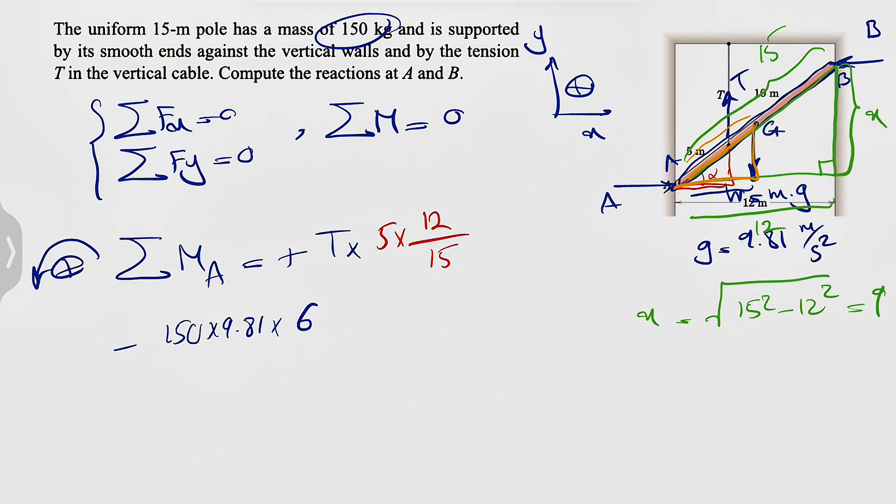And the last thing would be the moment of B. That one's also counterclockwise, so plus B times the vertical distance is exactly the X that we found, 9, equals 0. So we have two unknowns in here. We're going to go to our Fx.